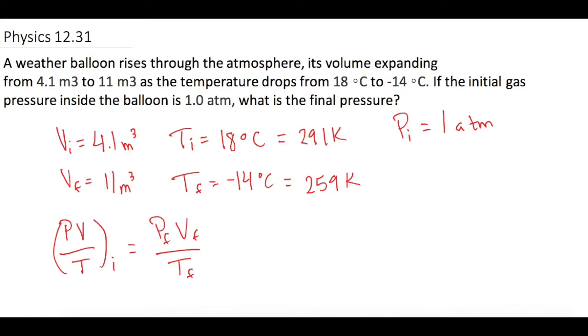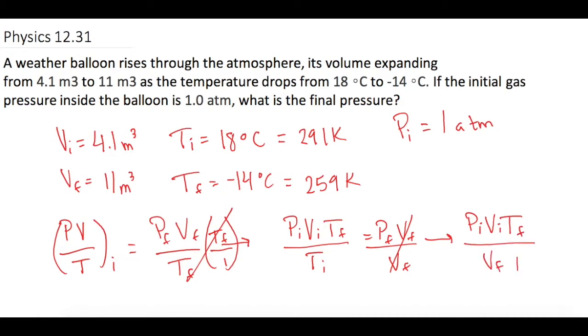Let's isolate this. We multiply both sides by T_final, so those cancel. Now we have P_initial V_initial T_final over T_initial equals P_final V_final. Then we divide both sides by V_final. Now we have P_i V_i T_f over V_f T_i equals pressure final.